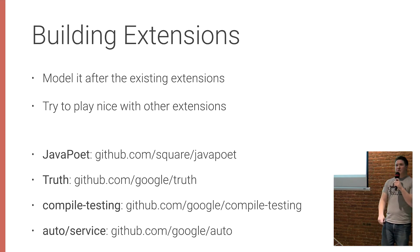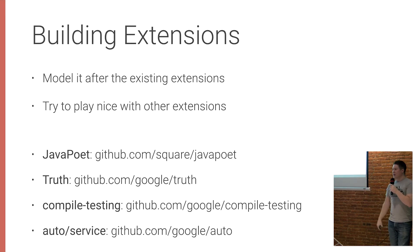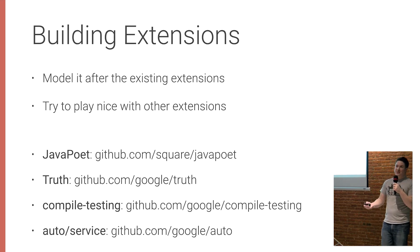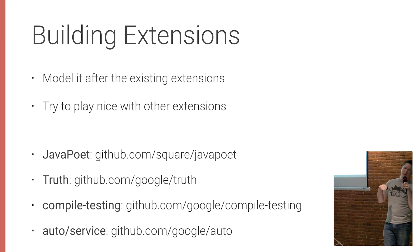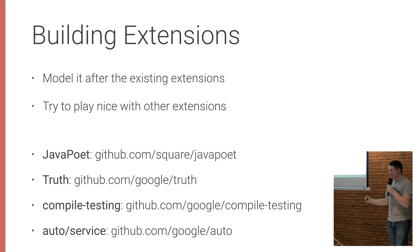These are the four libraries you'll probably want when writing an extension. JavaPoet helps you write and generate Java code. Truth and Compile Testing by Google are how you'll test your extension — and you are going to unit test your extension. The last one: in order for AutoValue to find your extension at compile time, it uses something called ServiceLoader. ServiceLoader requires you to create a special file in your jar. AutoService just takes care of that for you — you annotate your extension and it generates the file automatically. You never have to think about it and you'll never forget it.